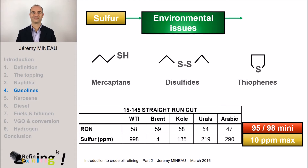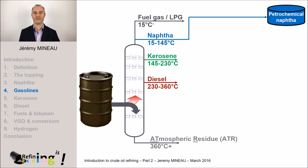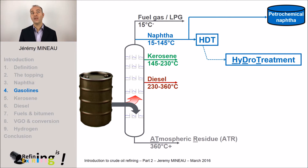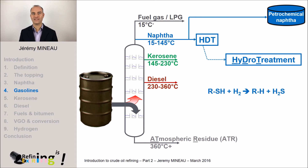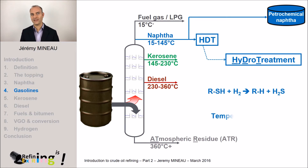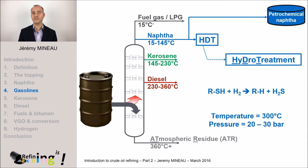It thus belongs to the refiner to work to respect these values. First, let's focus on sulfur. The refiner removes the sulfur with the help of hydrogen in a unit called hydrotreatment. The refiner uses the strong affinity between hydrogen and sulfur to let them react together. This chemical reaction is made in the presence of a catalyst, at high temperature — about 300 degrees — and under moderate pressure between 20 and 30 bars. The typical catalyst is alumina on which are deposited some metals like cobalt or molybdenum.